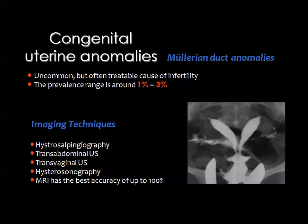These anomalies are diagnosed by various radiologic techniques. Hysterosalpingography was previously a major tool and is still used. Transabdominal and transvaginal ultrasound, sonohysterography, and MRI are also important, with MRI considered one of the most accurate tools for evaluation of congenital uterine anomalies.